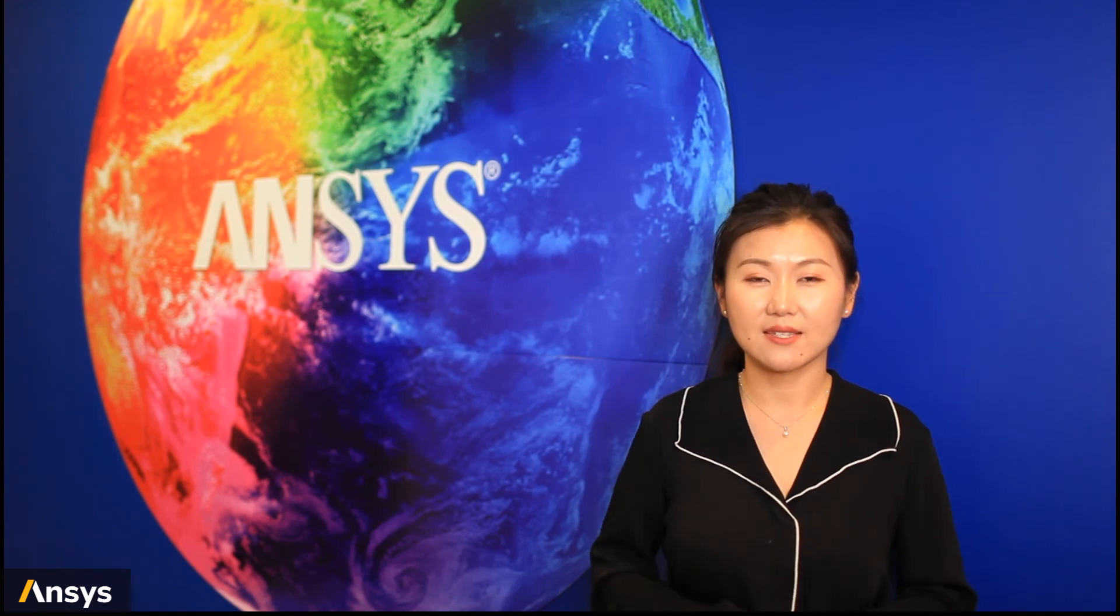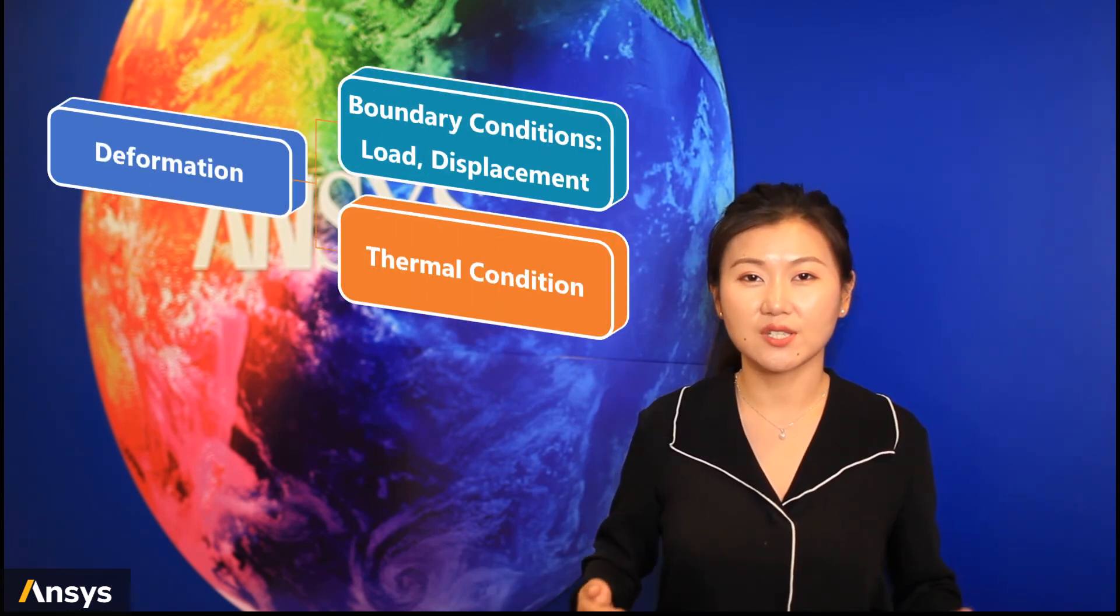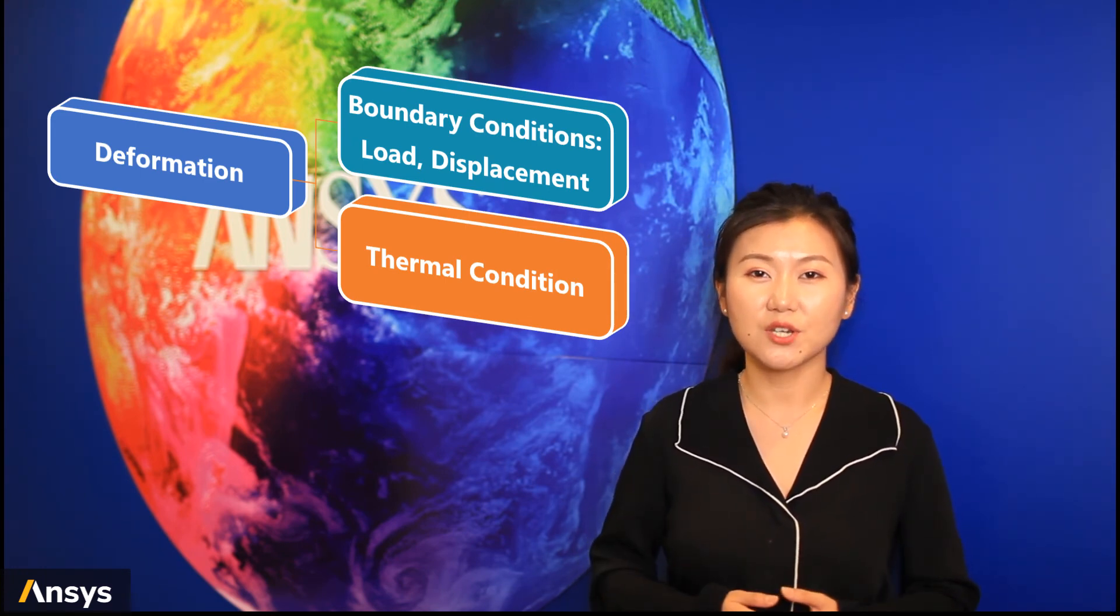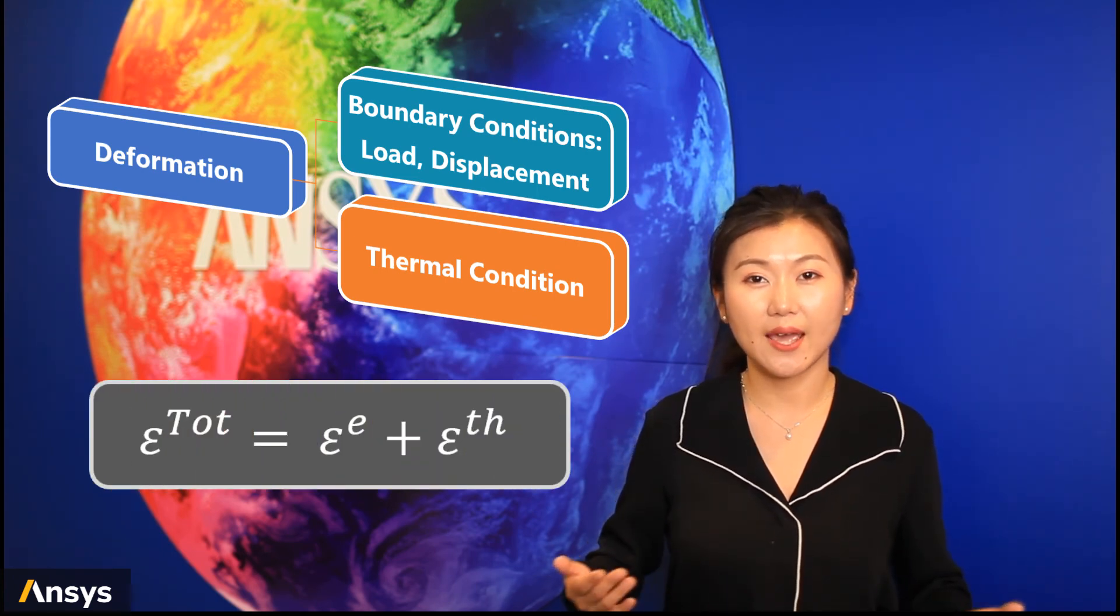Another point to clarify is, in our analysis, a structure can be under both boundary conditions and thermal conditions at the same time. In such case, the total deformation of a structure can be written as a combination of elastic strain and thermal strain.